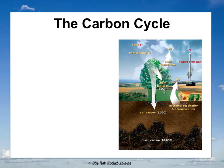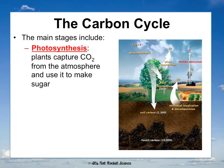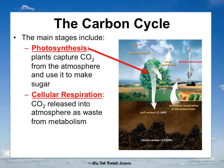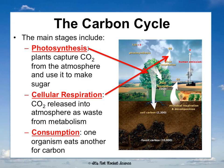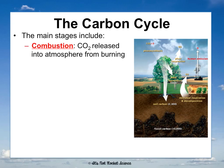We're going to narrow the carbon cycle down to six steps. First is photosynthesis: plants capture CO2 from the atmosphere and use it to make sugar. Cellular respiration is the opposite — CO2 is released into the atmosphere as waste through metabolism as organisms consume food for energy. Consumption is when one organism eats another for energy, taking in carbon in the form of macromolecules. Combustion is any time CO2 is released into the atmosphere when something is burned.